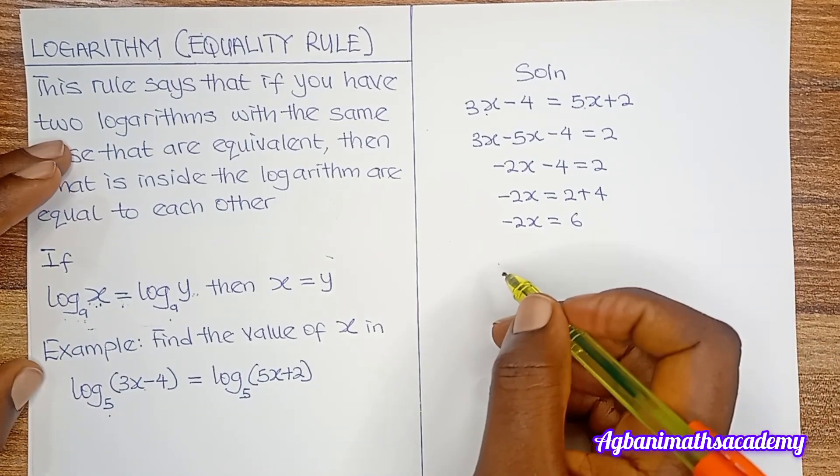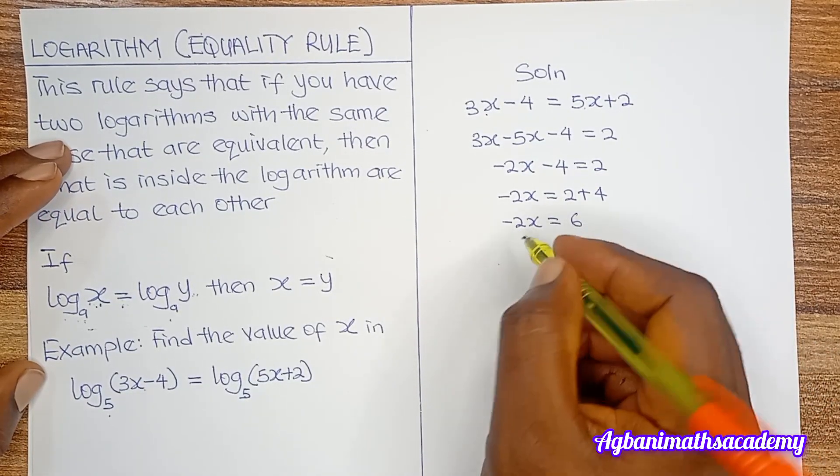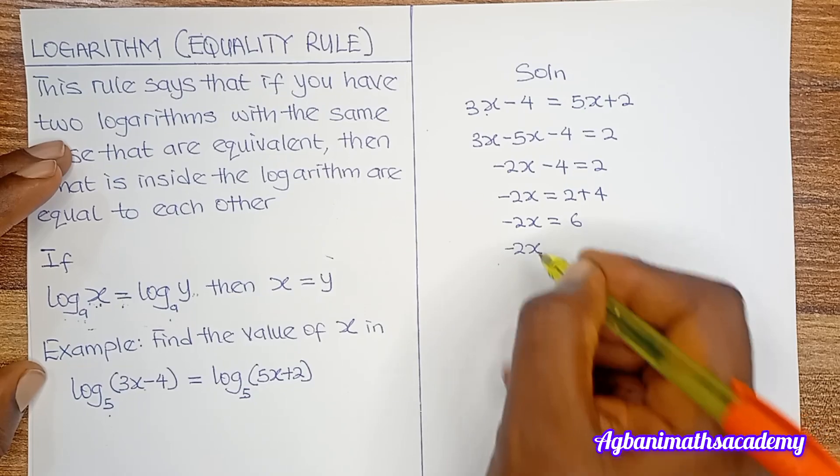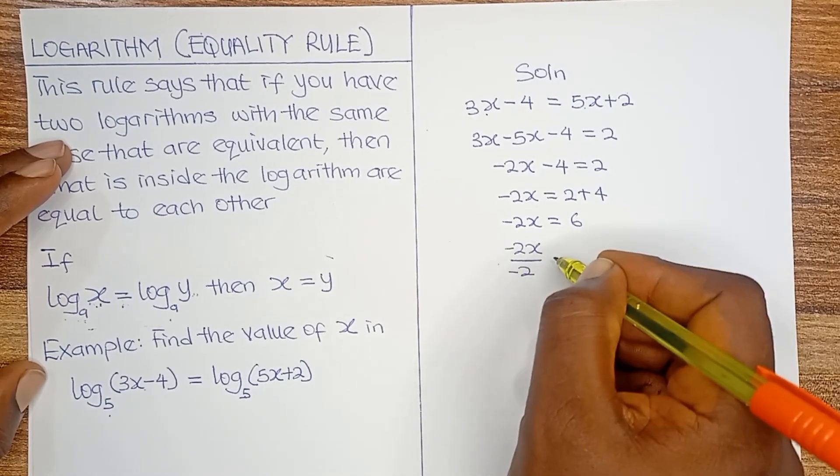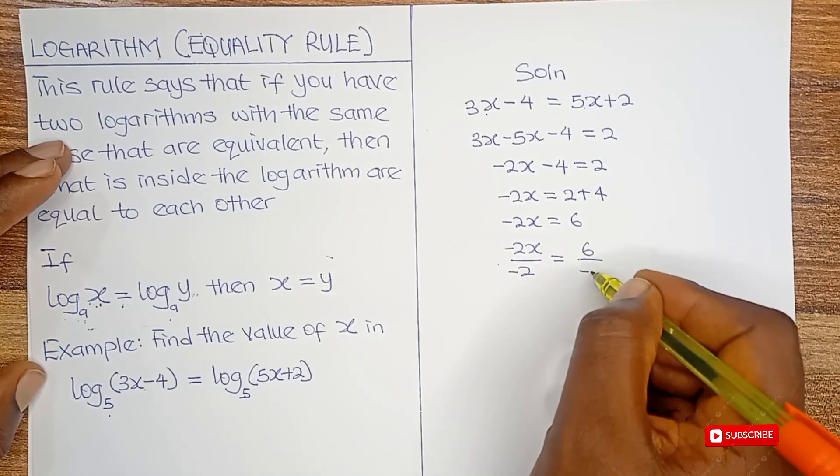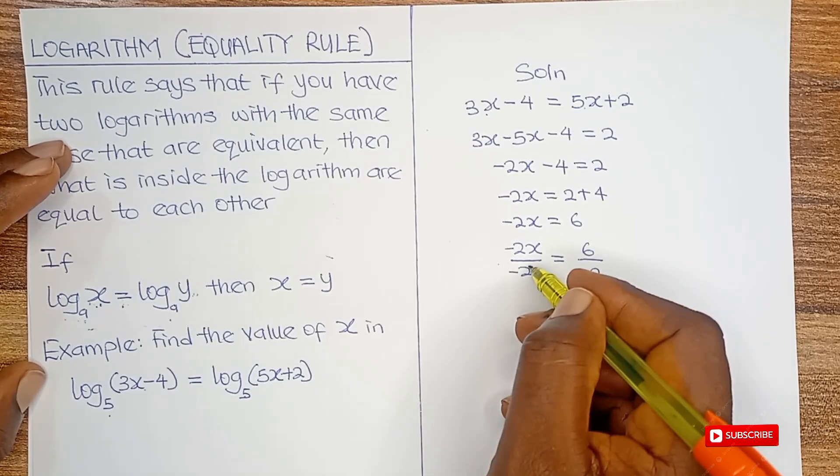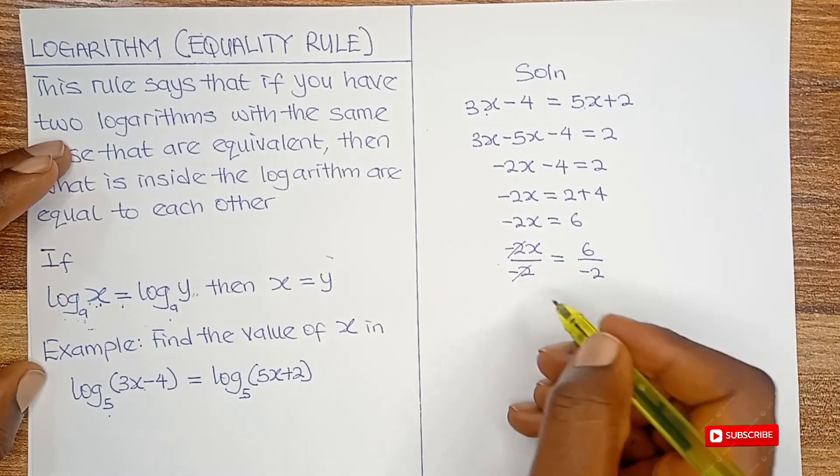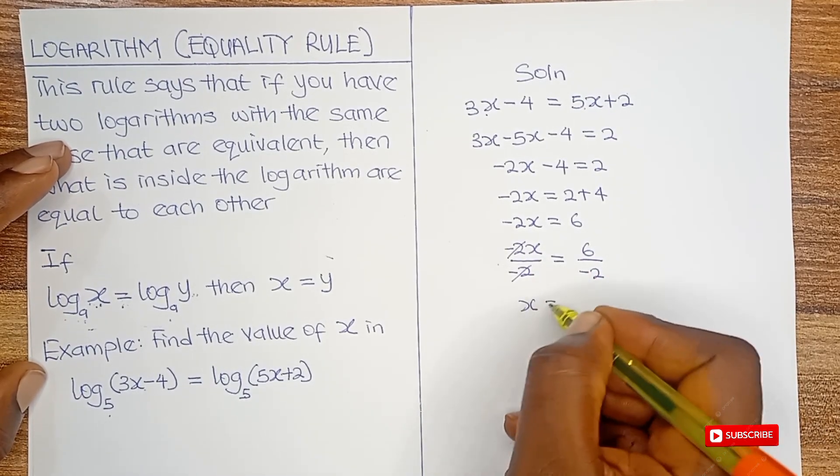So to get the value of x, we need to divide both sides by minus 2. So we have minus 2x divided by minus 2 is equal to 6 divided by minus 2. So on the left, minus 2 is going to cancel out minus 2. We have x is equal to,